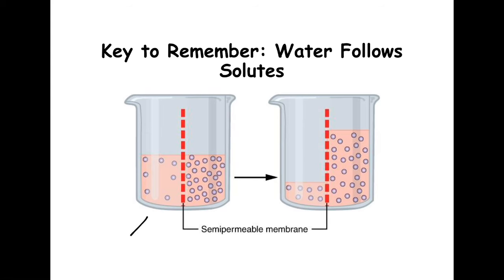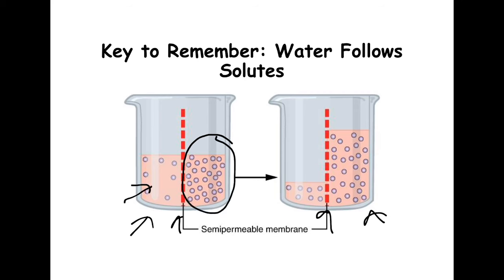Here we have two beakers, each with a semi-permeable membrane. While diffusion has molecules moving from high to low concentration, in osmosis water follows wherever solutes go. If there are high levels of solutes on one side of the membrane, water will move toward that side. Over time the water volume on the high-solute side increases while the other side decreases. That's why if you eat something very salty or sweet, you get thirsty — water follows solutes.